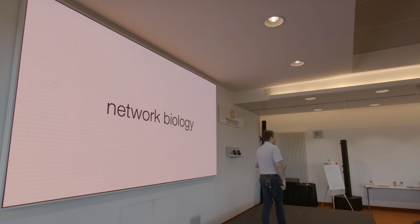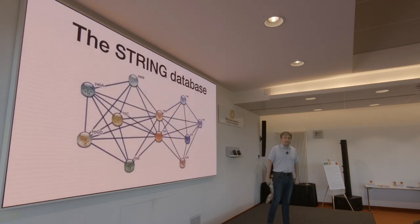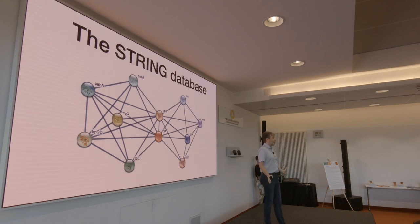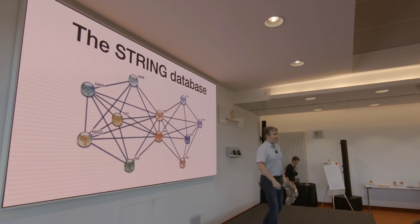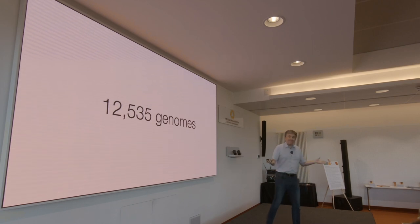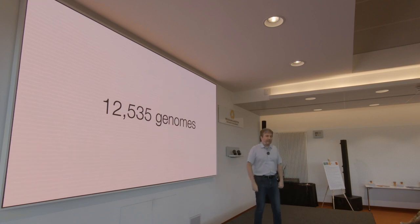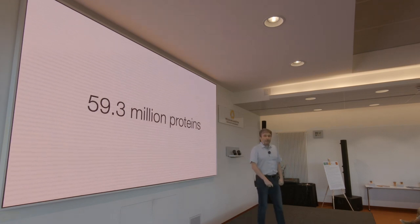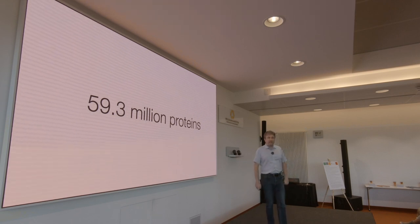Now, where do we get networks from? One place is the String database. Just to have an idea, how many people in the room have already heard about String? Okay, good, but I kept this part short. So, as you know, it's a database where we are starting in version 12 of String that we just released recently from a small collection of 12,535 genomes, which is less than the previous version because we've now done smaller things so we don't need as many genomes, encoding 59.3 million different proteins.